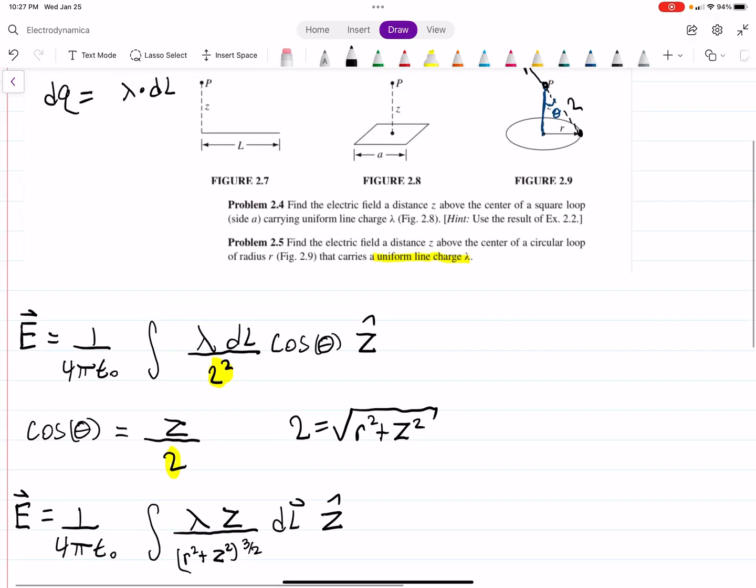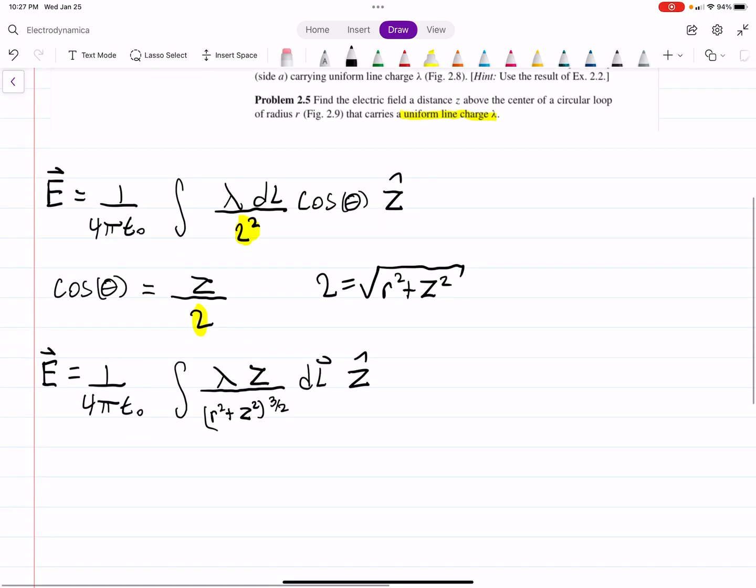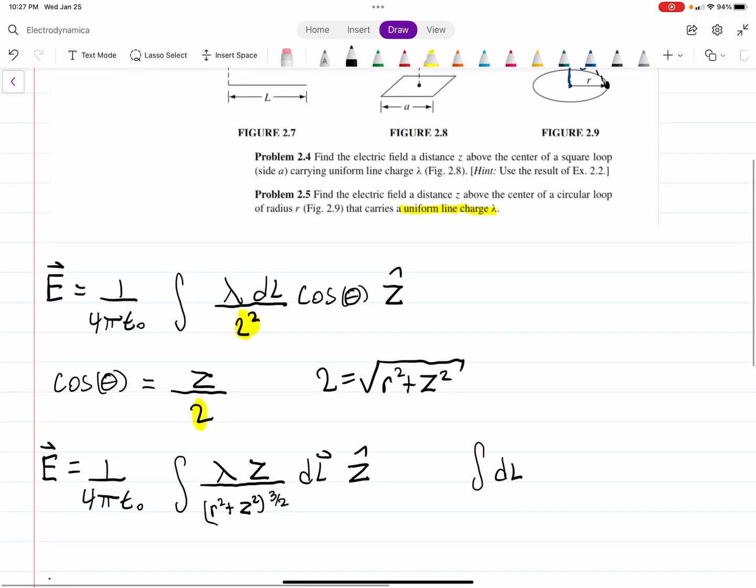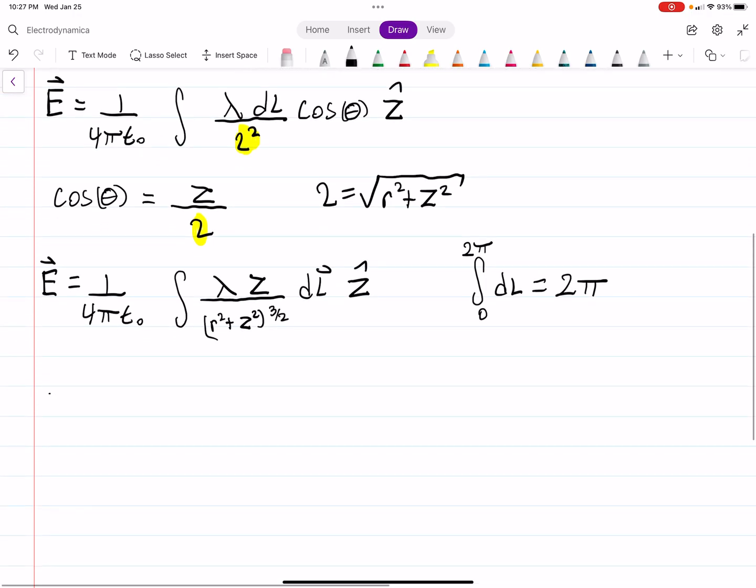So lambda is a constant, z is a constant, that's not changing. The radius isn't changing, so all of this is actually constant. And the only thing we need to integrate is the integral of dL. And of course we're going to integrate over this whole circle, the whole circumference of the circle, so we'll integrate from 0 to 2 pi r. And that is of course just 2 pi r.